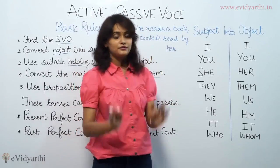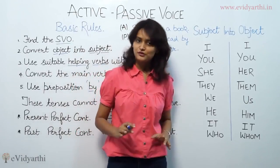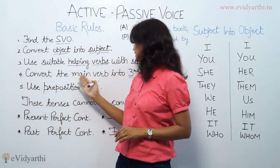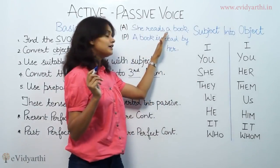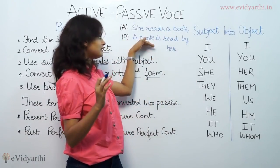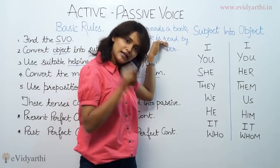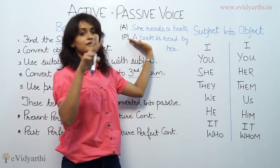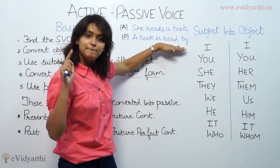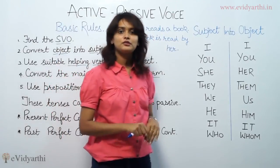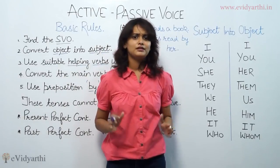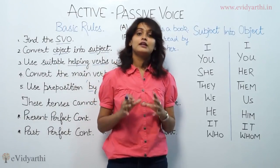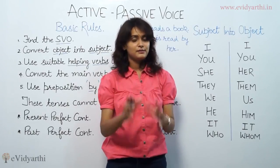Putting the right helping or auxiliary verb with the subject is very necessary, and the formula will be the same: singular subject takes singular verb, plural subject takes plural verb. Now, convert the main verb into its third form. We have the subject identified and the helping word placed according to the subject — this is also called subject-verb agreement.